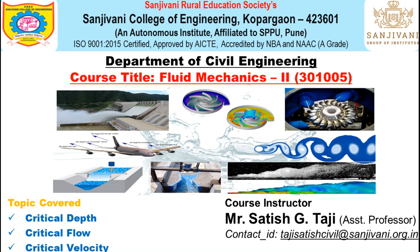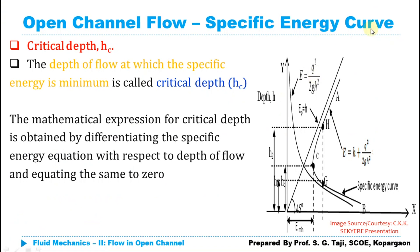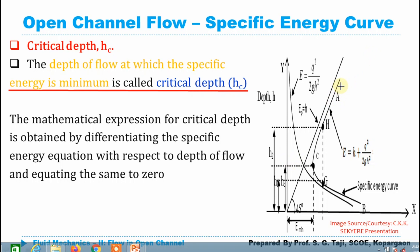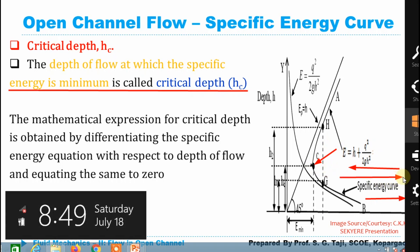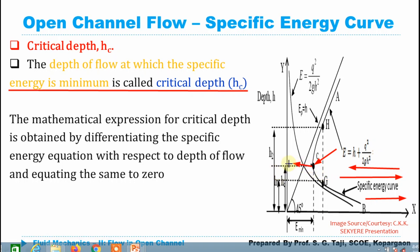In this lecture we are going to discuss the critical parameters which occur at the minimum specific energy — that is critical depth, critical flow, and critical velocity. Starting from critical depth: it is the depth of flow at which the specific energy is minimum. Looking at the specific energy curve represented by A-C-B, the specific energy decreases to a minimum at point C, and that corresponding depth of flow is known as the critical depth, generally represented by Hc.